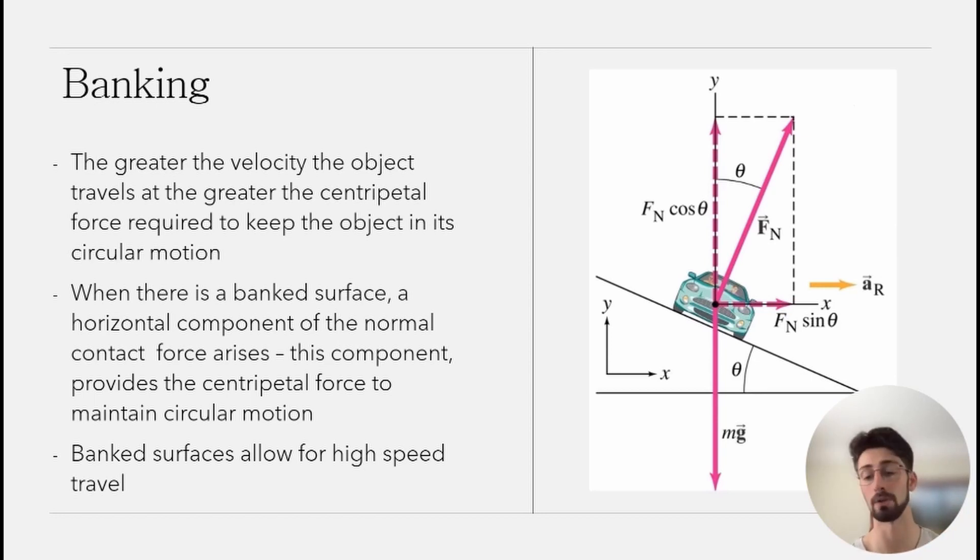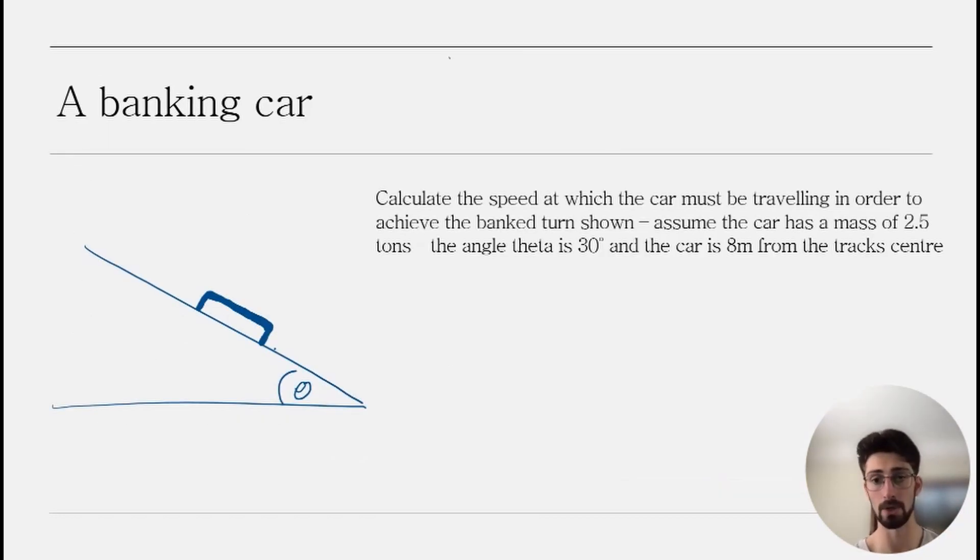Here is a question for you—maybe this is something that you can tackle, but we're going to do it together. It says that you need to calculate the speed at which the car has to travel in order to achieve the banked curve shown. Assume that the car has a mass of 2.5 tons, the angle theta is 30 degrees, and the car is 8 meters from the track center. To make this a bit easier, I'm going to add these diagrams, effectively what was in our previous slide.